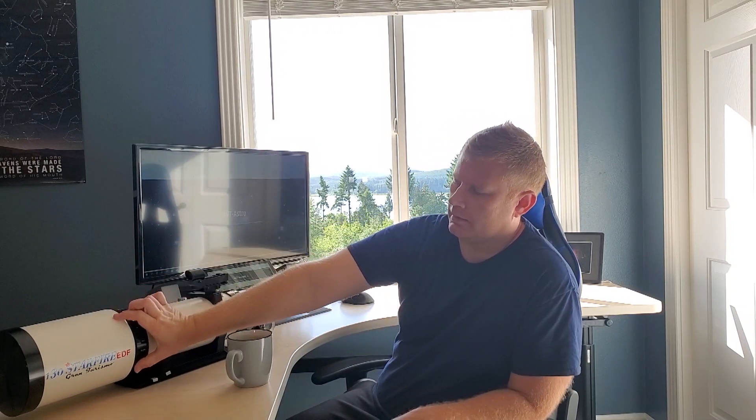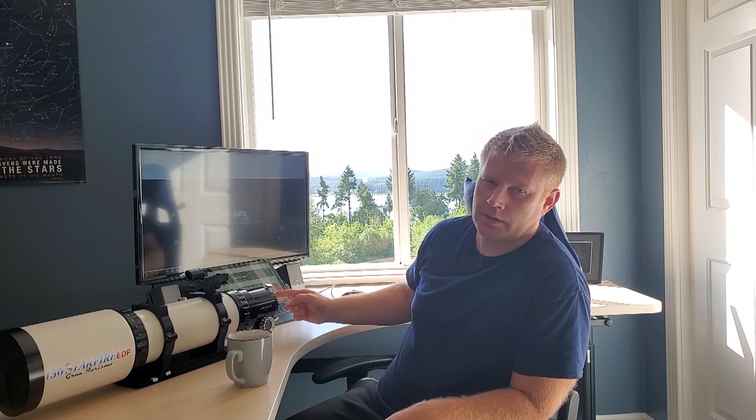So to start out: the way a refractor works is there's a lens up in the front, and basically what it does is converge all the light coming into the telescope to a single point called a focal point somewhere in the back. It's about as simple as it gets for an optical design — no diagonal, no mirrors, nothing. There's just a lens that converges the light.